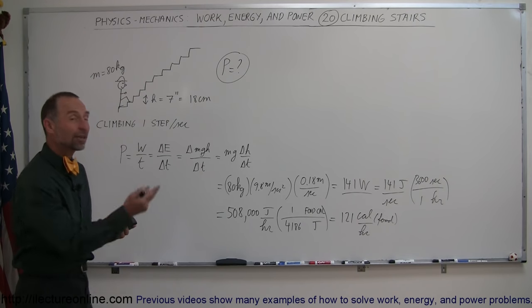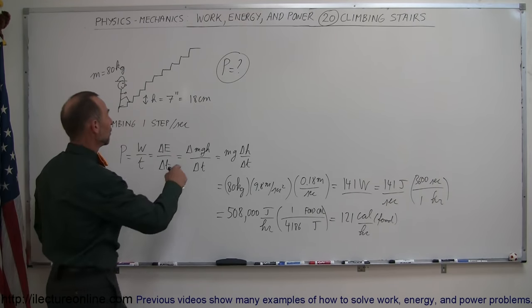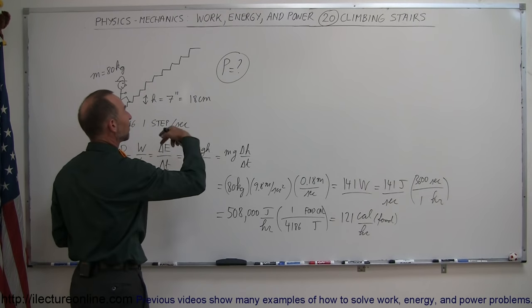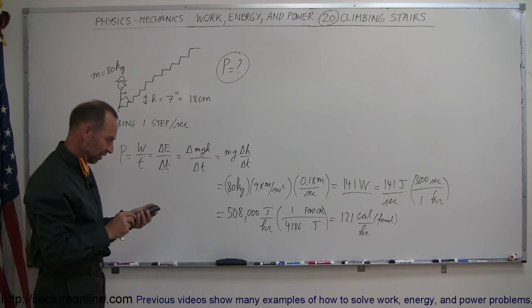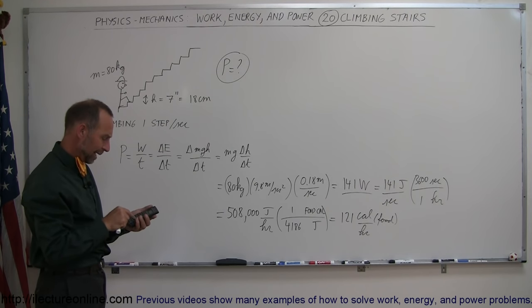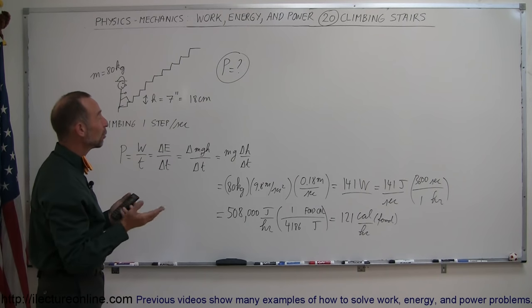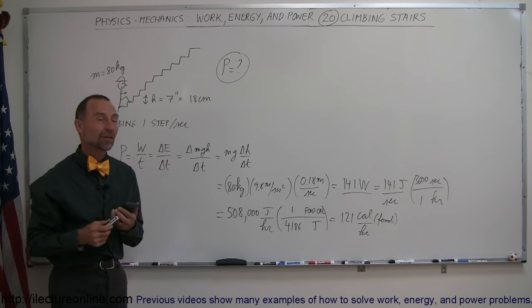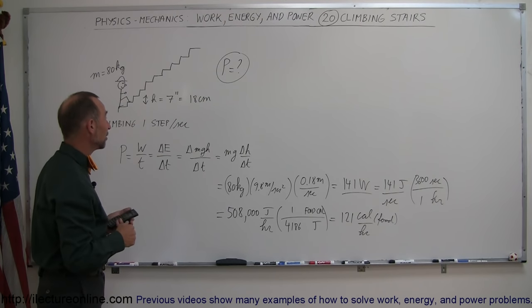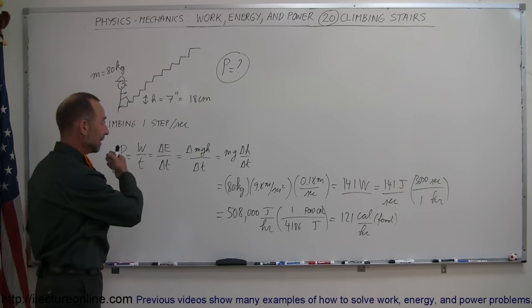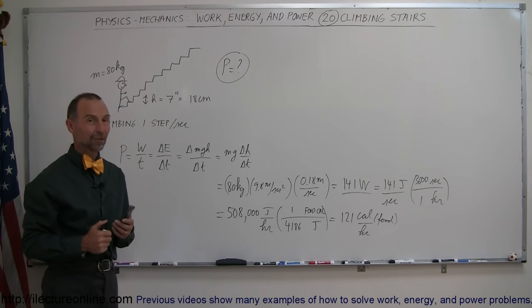Now it's kind of interesting. If you do that for an hour, how much height do you think you will have gained? If you multiply this height times 3,600 seconds, because that's the number of seconds in an hour, 0.18 times 3,600, that's 648 meters or about 2,000 feet. So if you do that for an hour, you will have gained about 2,000 feet or 648 meters in an hour of vertical height, and that's the power required to do so.